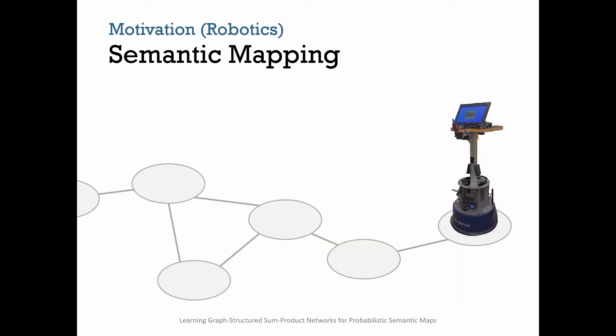In our semantic map, nodes represent entities in the world such as places and objects, and edges indicate spatial relations between the entities based on, for instance, a topological map.